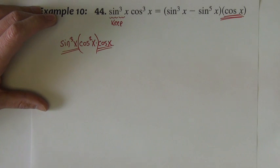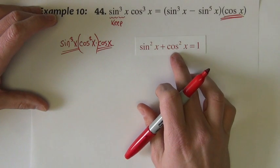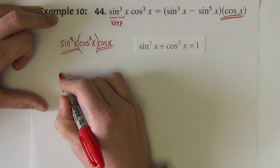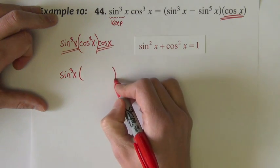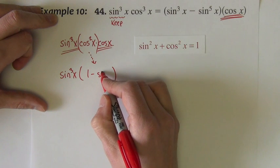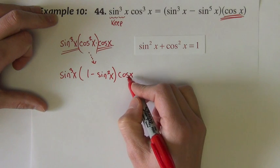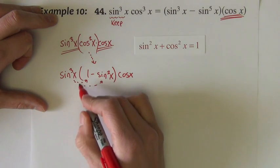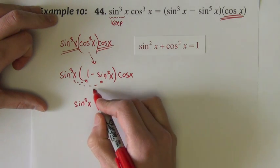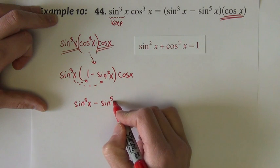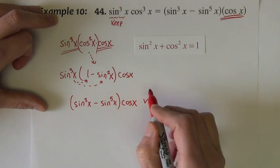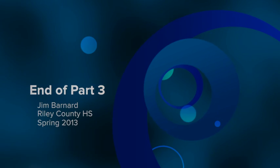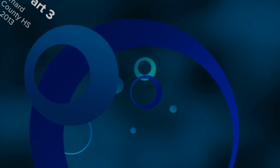And that cosine squared does not show up in the answer at all, so let's replace it. Cosine squared will be the same as 1 minus sine squared. Let's do that. Keeping the sine cubed, replacing cosine squared with 1 minus sine squared, and I'm keeping that cosine x. Now I have sine cubed times this 1 minus sine squared I can distribute. So sine cubed times 1, sine cubed. Sine cubed times sine squared, sine to the fifth, times cosine x. And there's what we wanted. So we have both lines.